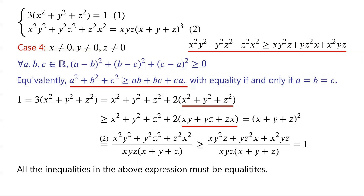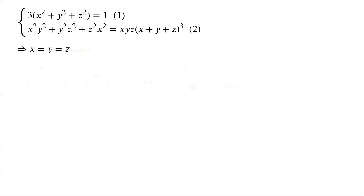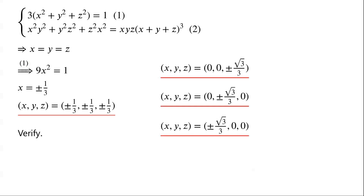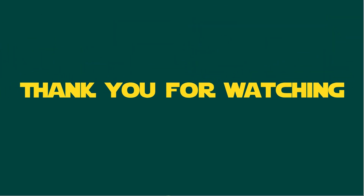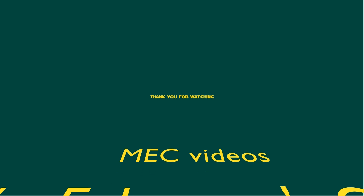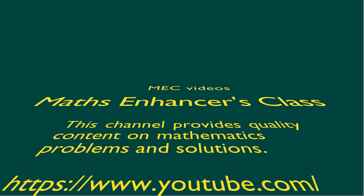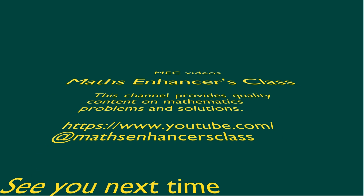This implies that all the inequalities in the above expression must be equalities. Therefore, we have x equals y equals z. Substituting y equals z equals x in equation one, we have 9x² equals 1. So x equals plus or minus one third. Therefore, x equals y equals z equals plus or minus one third. It is easy to verify that, including the previously obtained six sets of solutions, in total there are 8 sets of solutions. Thank you.